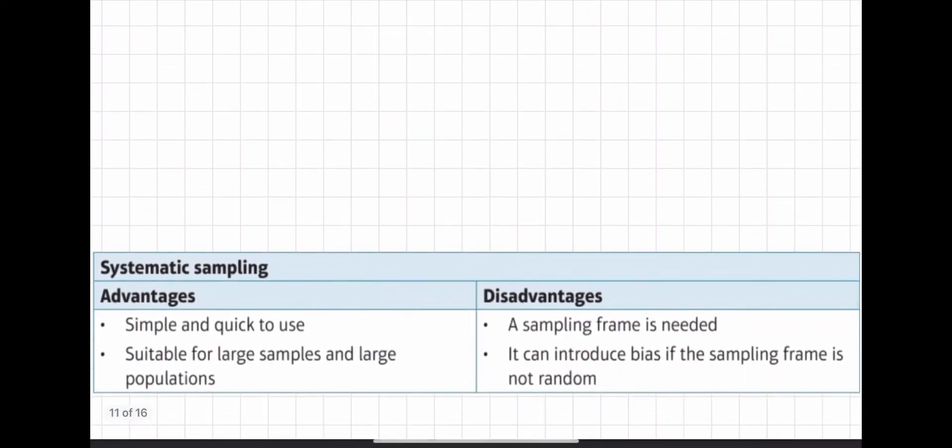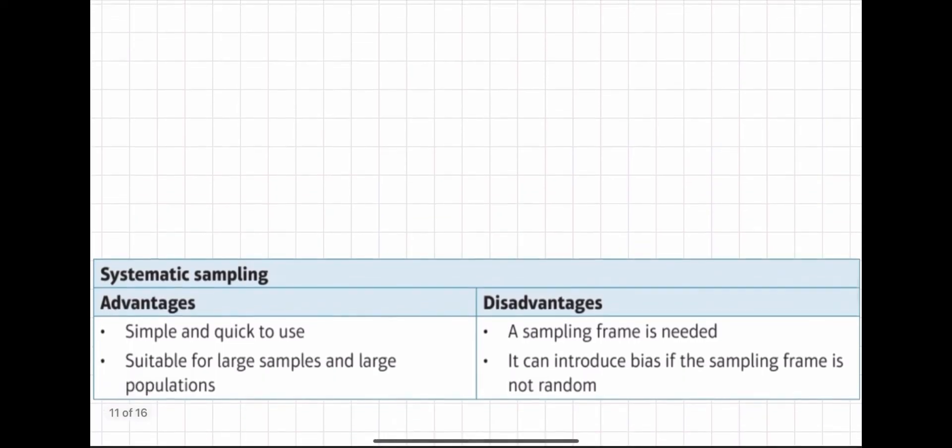So now let's look at advantages and disadvantages. Advantages, as you can see, it's simple and quick to use and it is suitable for large samples and large populations. As you can see, it was 50,000, which is probably the biggest population we've seen on this channel so far. But disadvantages is you need a sampling frame, and it can introduce bias if the sampling frame is not random. For example, if the sampling frame is ordered, what you want to do is get a sampling frame, jumble it up, and then give each element or sampling unit a number.